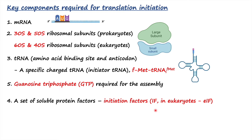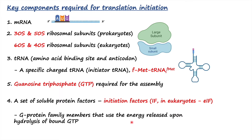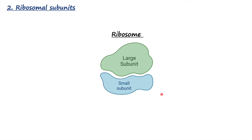Lastly, we require a set of soluble proteins called initiation factors. In prokaryotes they are called IF, while in eukaryotes they are called eIF — eukaryotic initiation factors. These proteins are G-protein family members that use energy released by GTP hydrolysis. When bound to GTP they are considered active, and when bound to GDP they are considered inactive.